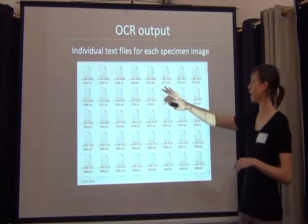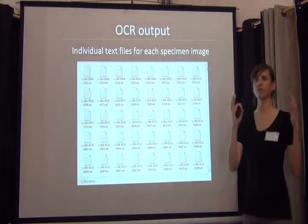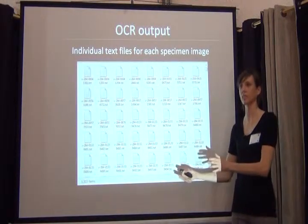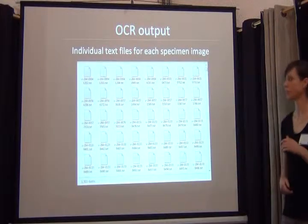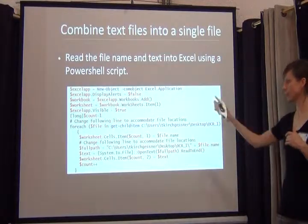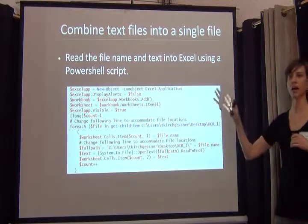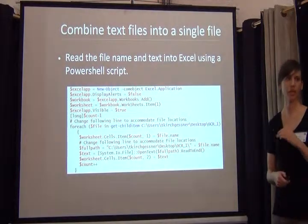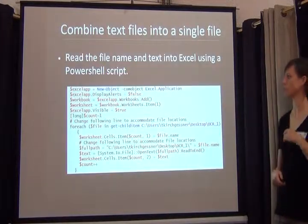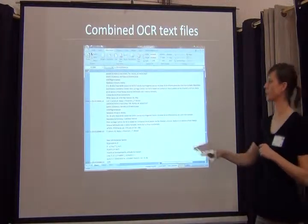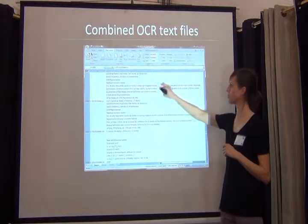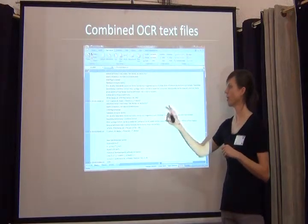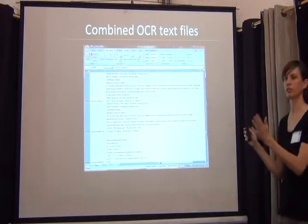If you're putting a thousand image files into Abbey, you're going to get a thousand text files out at the end. We created this little PowerShell script to actually combine all of those text files into a single spreadsheet to make working with them much more easily. We can share that with people if you're interested. In the end, you're going to get cells of text corresponding to each barcode number, and from there you can work with that file.